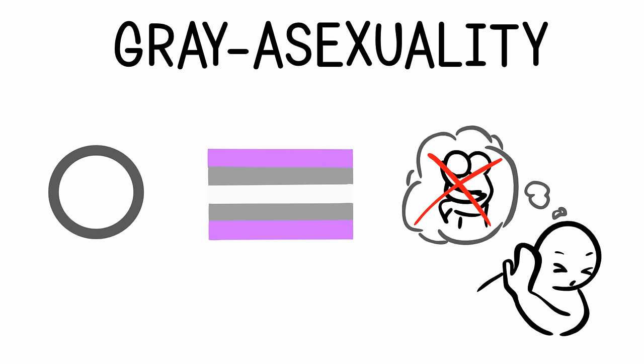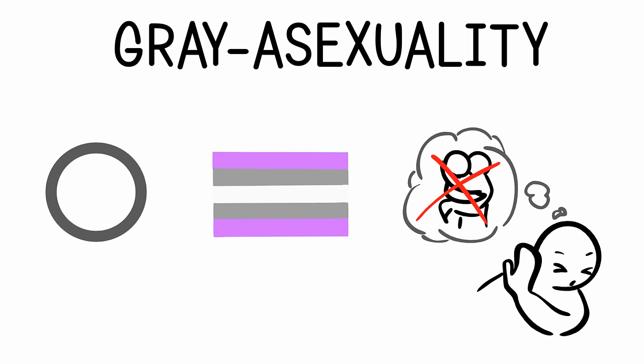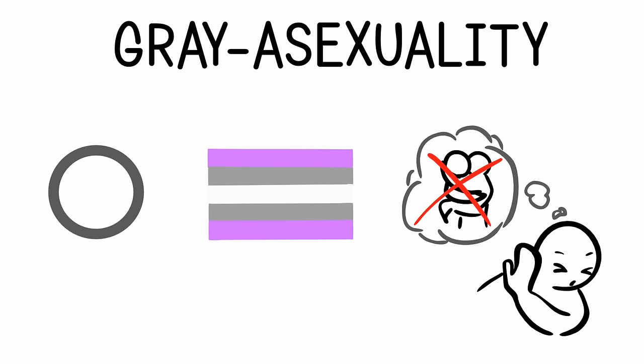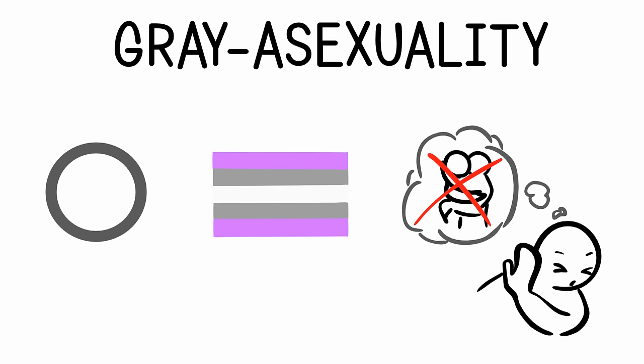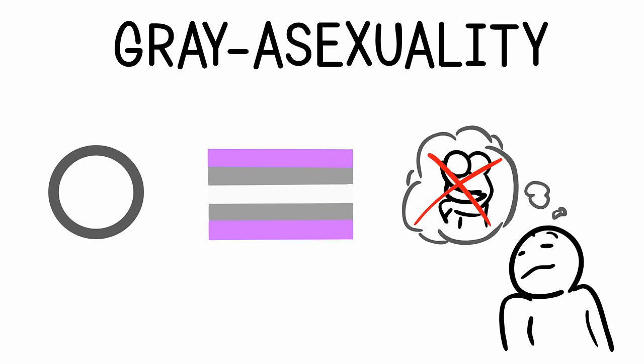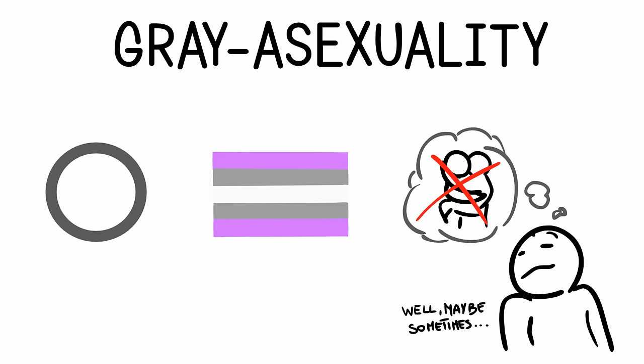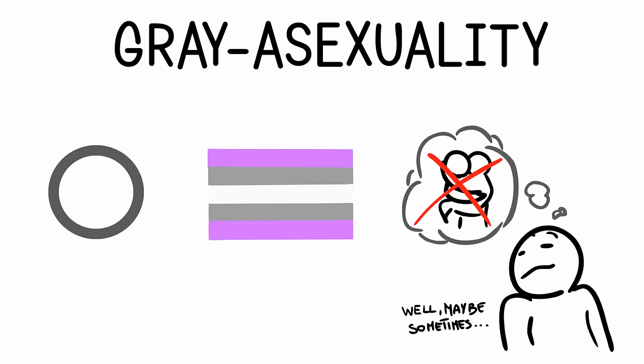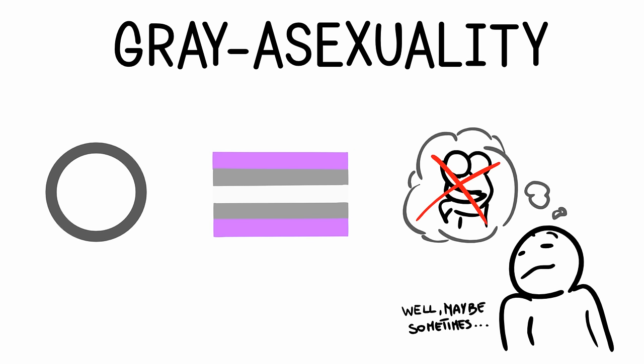7. Gray Asexuality. This is similar to the previous sexuality. However, instead of never experiencing sexual attraction, someone who is graysexual may very rarely experience sexual attraction. They are still valid under the asexuality umbrella, despite occasionally experiencing sexual attraction.